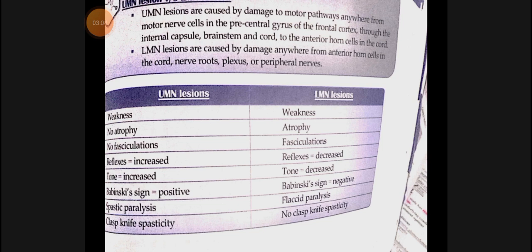In UMN lesion there is spastic paralysis, so clasp-knife spasticity is present. That completes our difference between UMN and LMN lesions. Now we will read a few things for MCQs, after which we will start our main topic, which is multiple sclerosis.